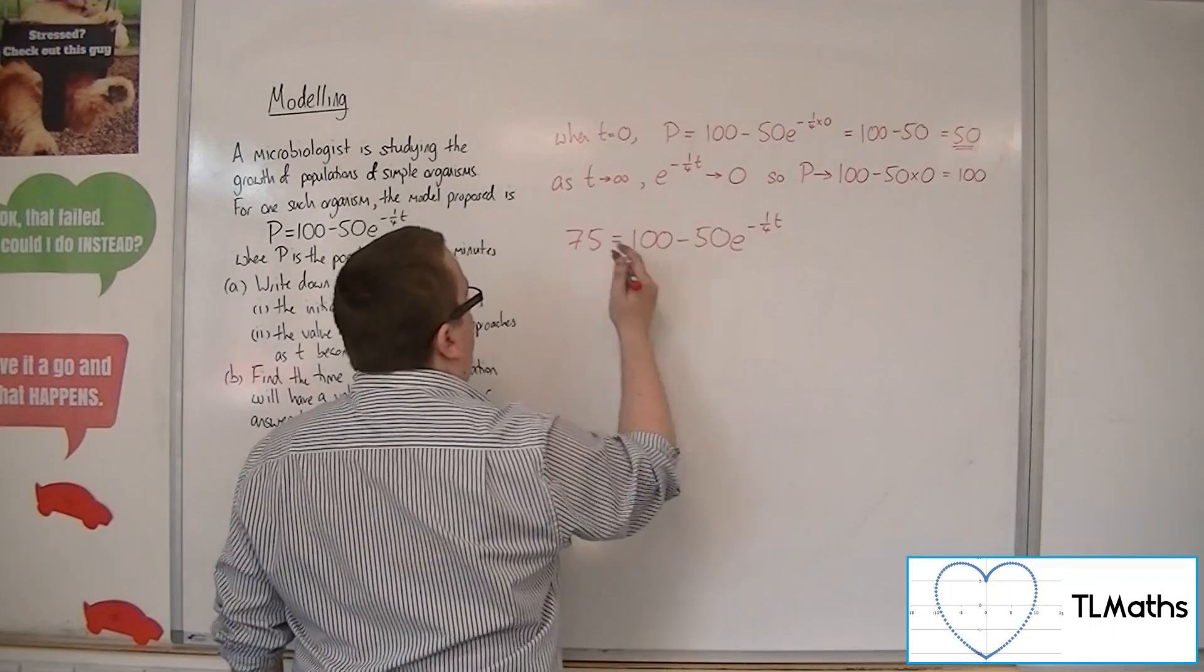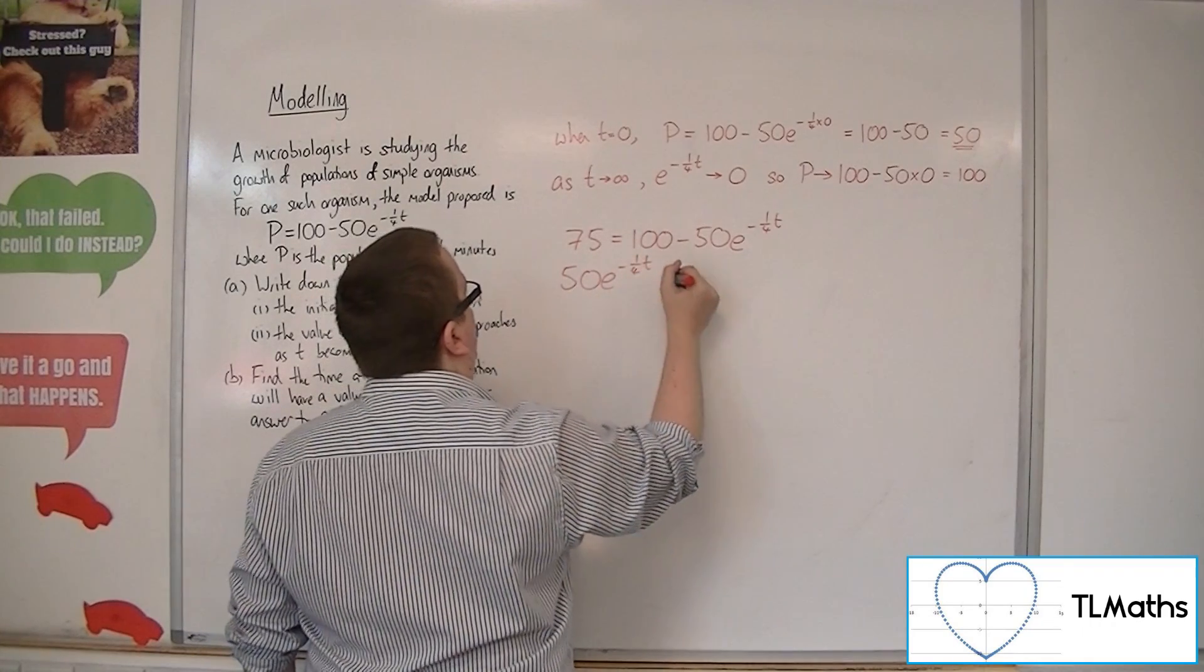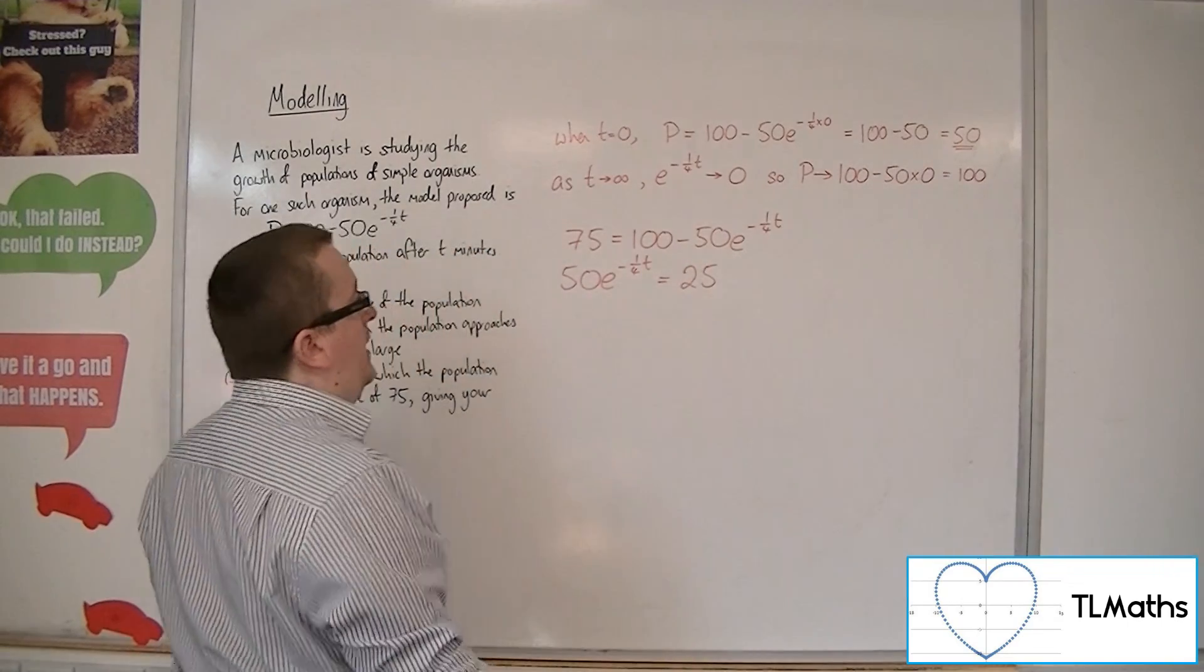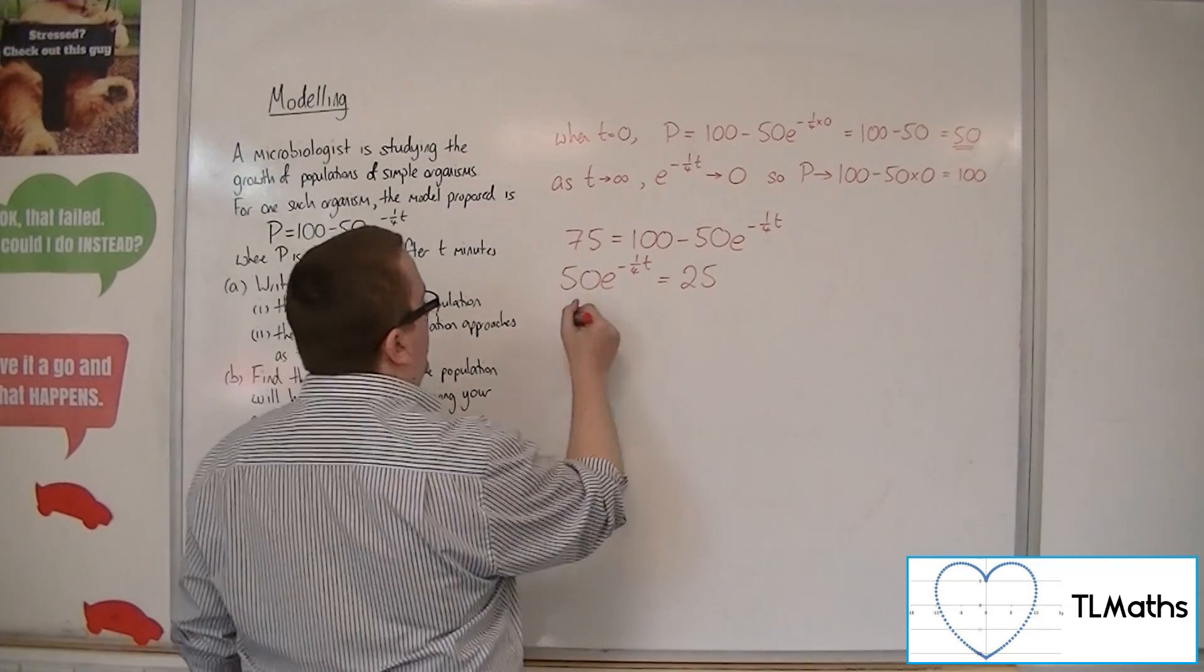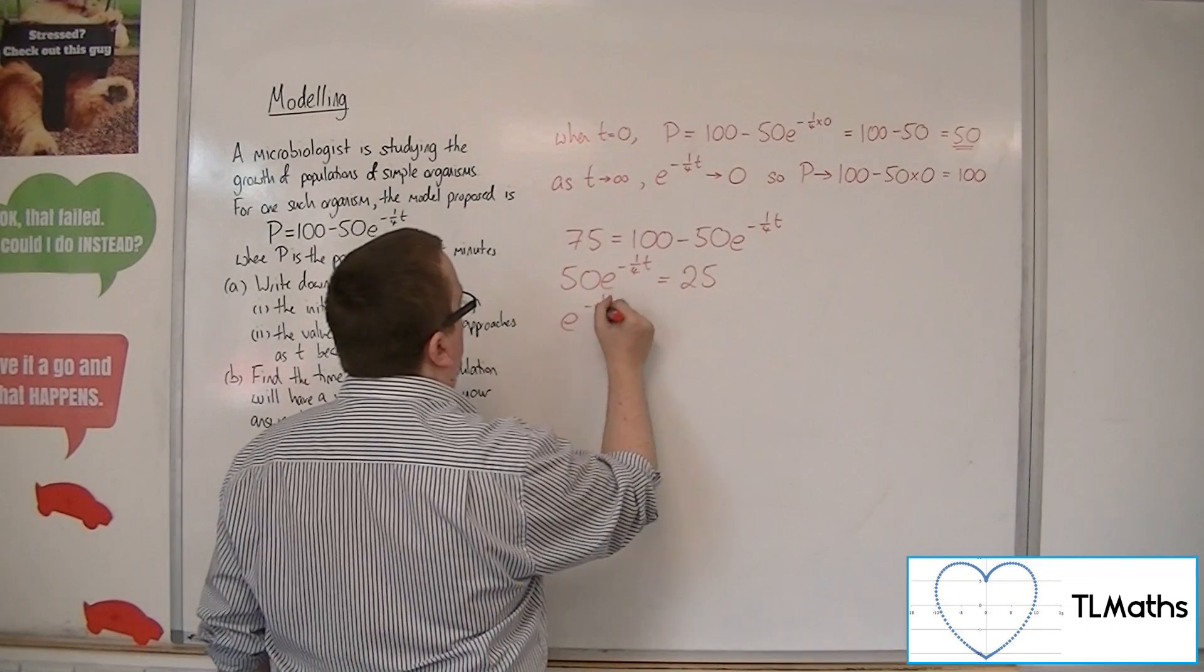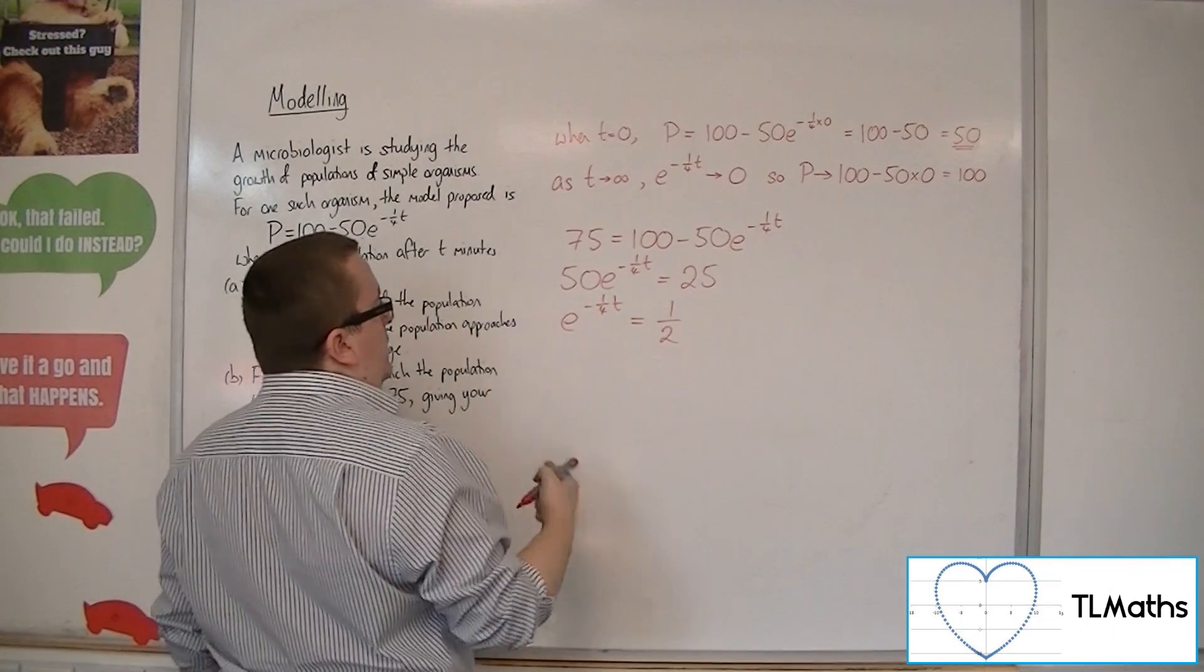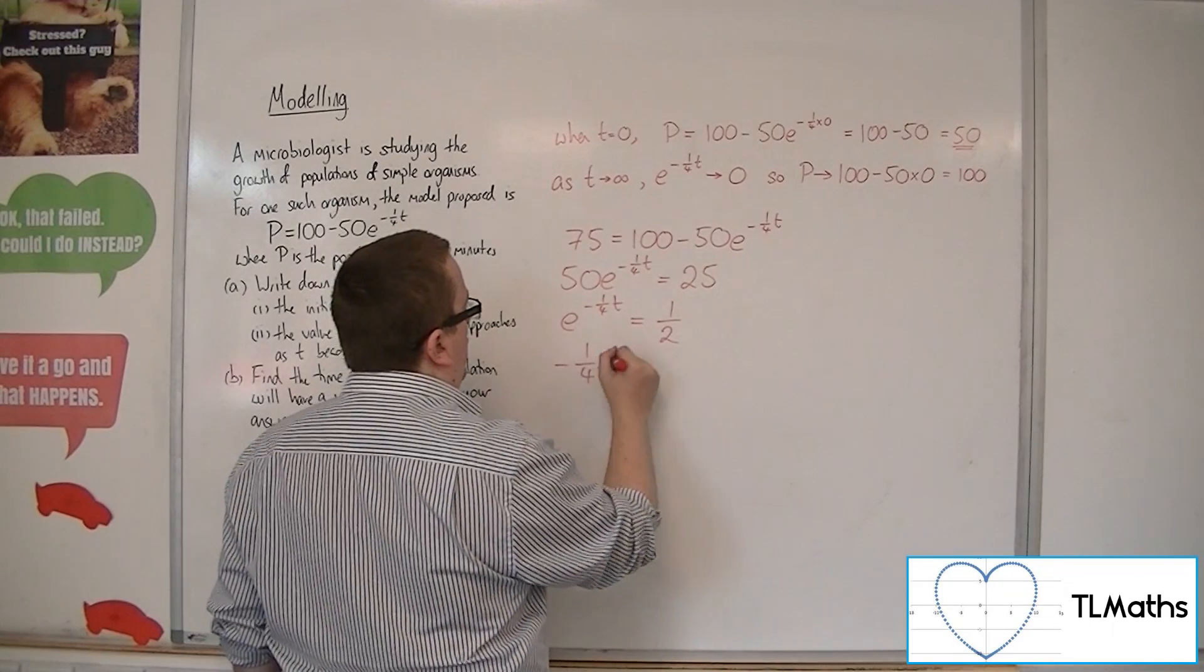So if I add 50 e to the minus a quarter t to both sides and then subtract 75 from both sides, I'll be left with this equation. Divide both sides by 50 so that e to the minus a quarter t is just equal to a half. Then you can log both sides.